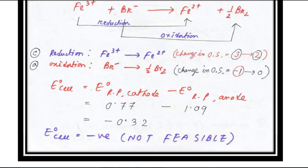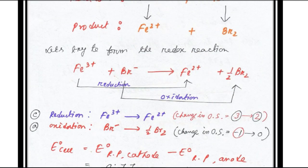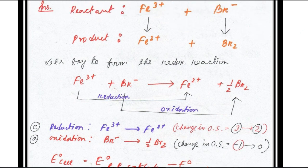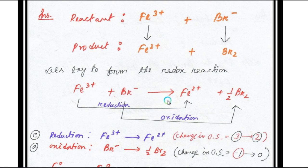Let's form the redox reaction. Fe3+ to Fe2+ gains an electron - that's reduction. Br- to Br2 loses electrons - that's oxidation. E° cell = E° cathode minus E° anode = 0.77 - 1.09 = -0.32 V. Since E° cell is negative, this reaction is not feasible.